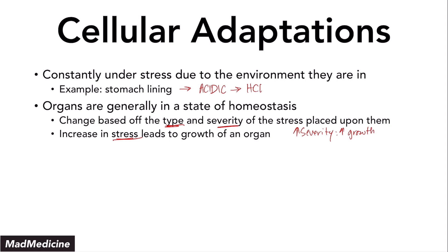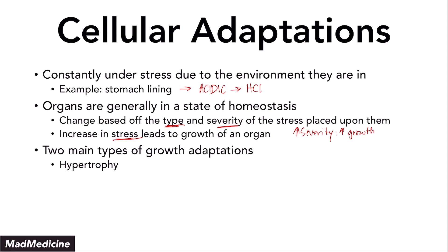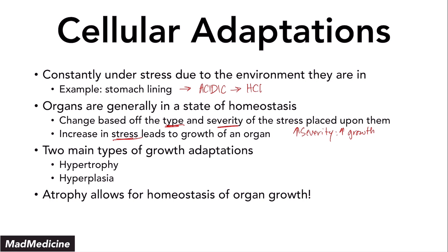There are two main types of growth mechanisms or growth adaptations: hypertrophy and hyperplasia, both of which we have discussed in previous videos. When an organ grows because of stress it goes through these mechanisms. But when you remove the stress, we have a reversal mechanism called atrophy. Atrophy allows our body's organs to go back to a normal state — it allows for the homeostasis of an organ to occur. Atrophy is the main reversal agent for hypertrophy and hyperplasia.